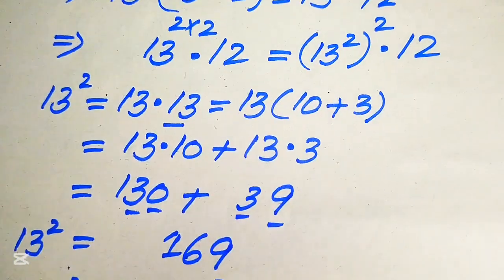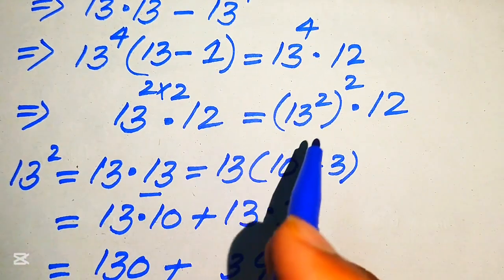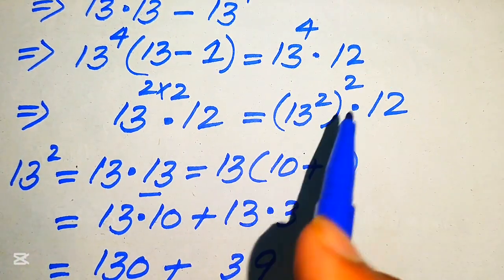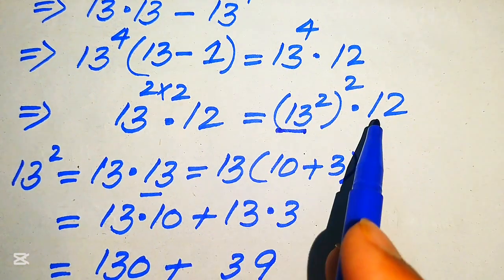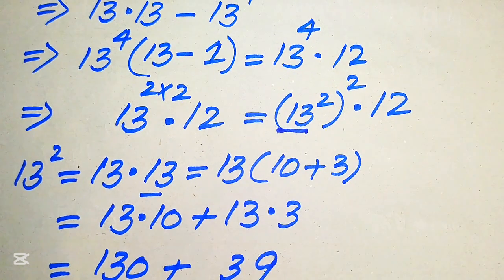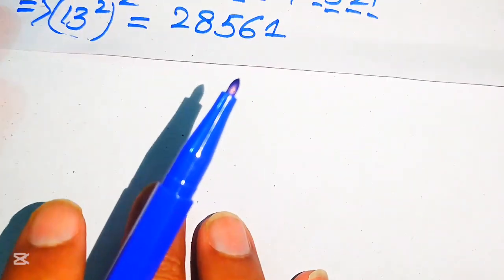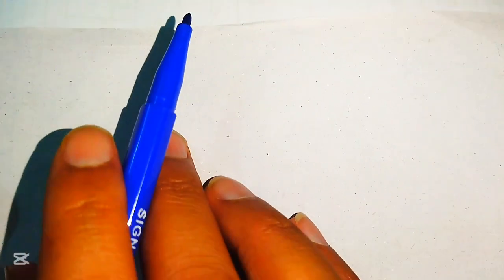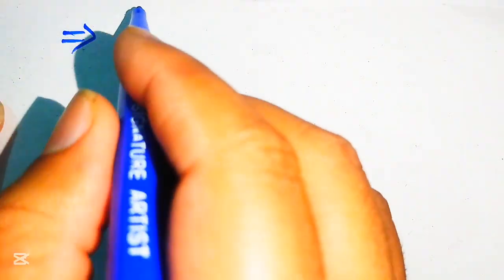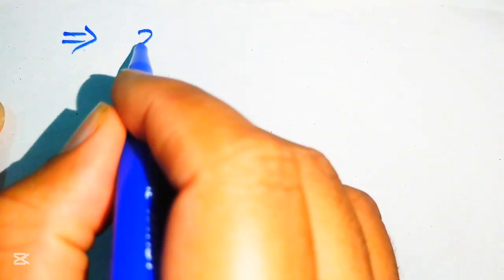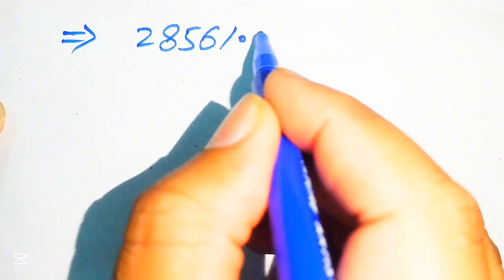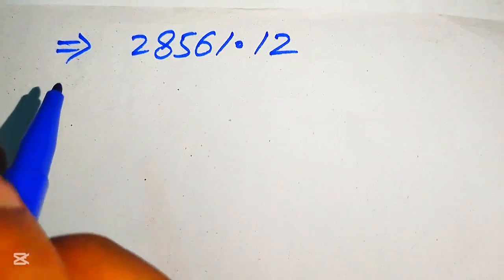We now move backward and substitute the value of 13 to the power of 4 back upward. We have 13 to the power of 4 equals 28561, and this is multiplied by 12. So we copy down this value: 28561 multiplied by 12.